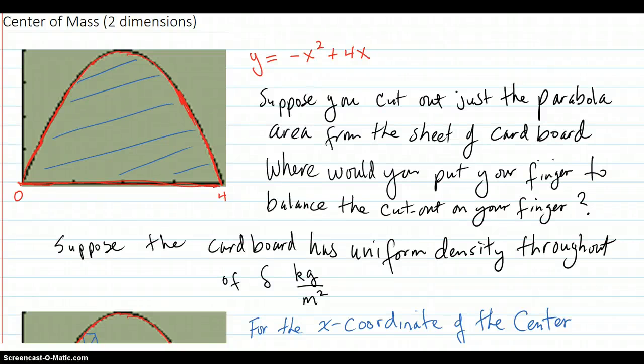Now we're going to find the center of mass in a two-dimension case. So we start off with this example here. Take this function, it's a turning down parabola, negative x squared plus 4x, and graph it over here. Graphs like this, comes down here.